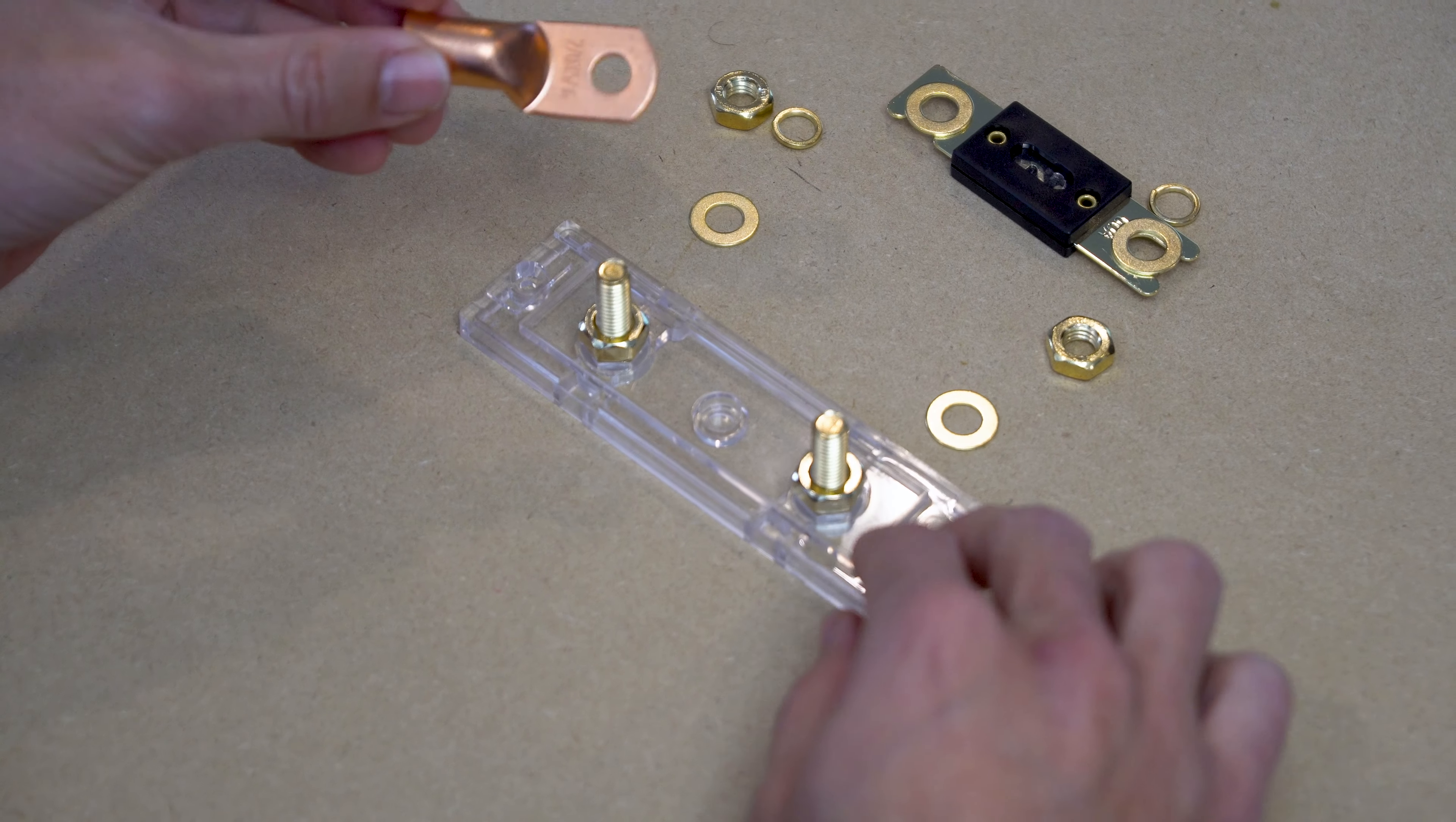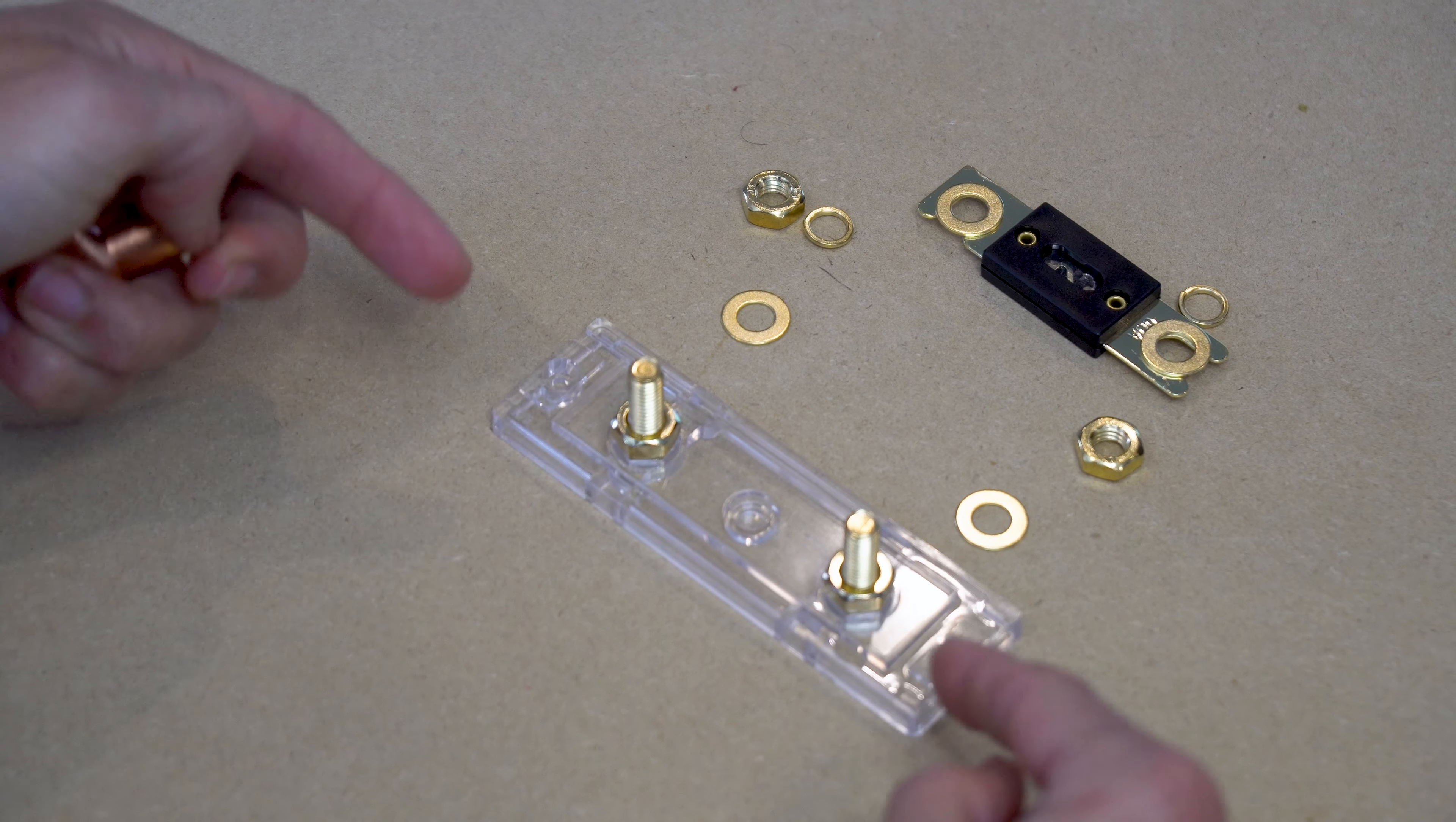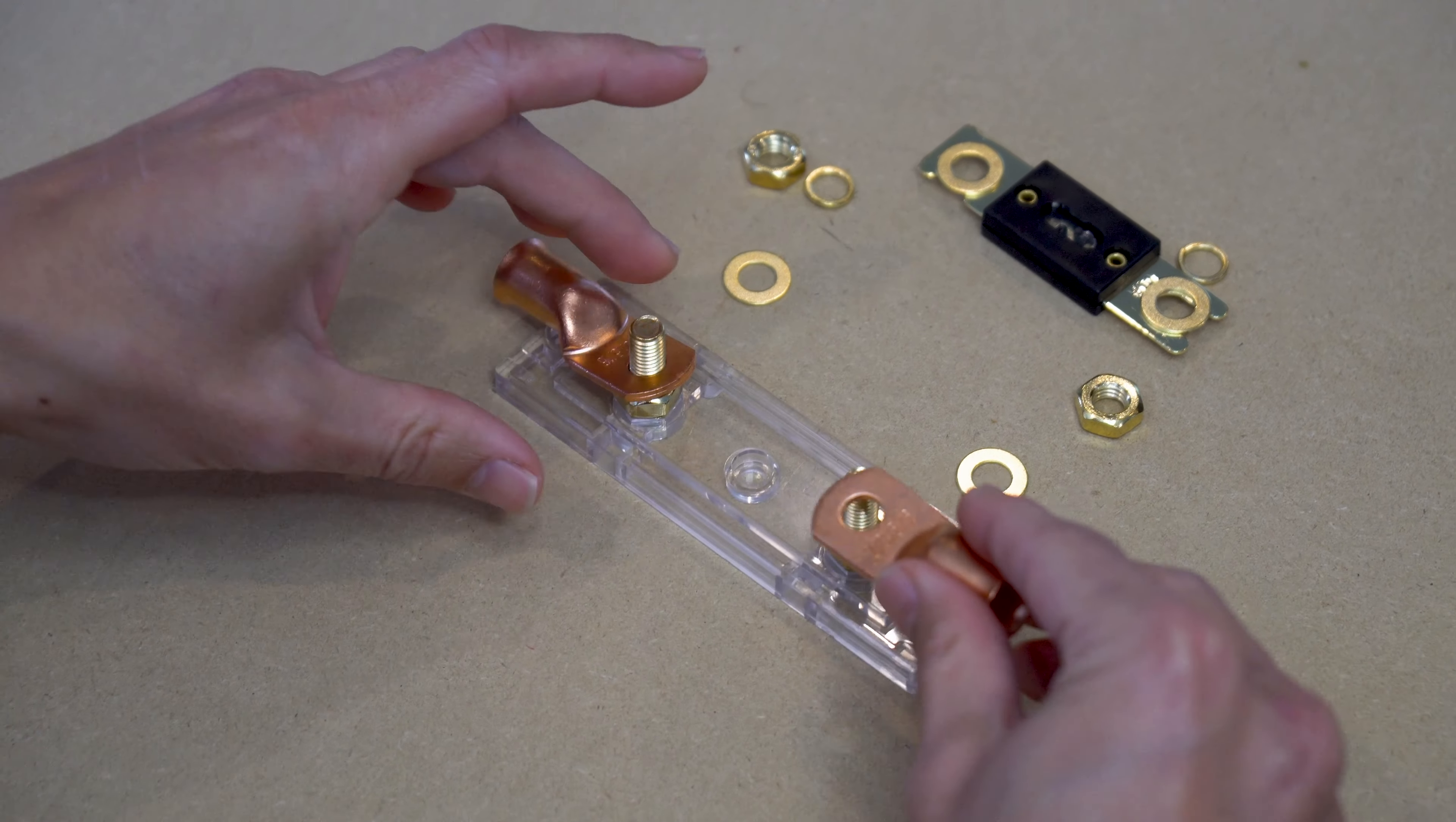In this example we'll be using these M8 lugs that accommodate 2 watt wire. To install this fuse to your wiring you'll need to crimp these lugs onto your electrical wire. Then when you're ready place the lugs over the terminals.